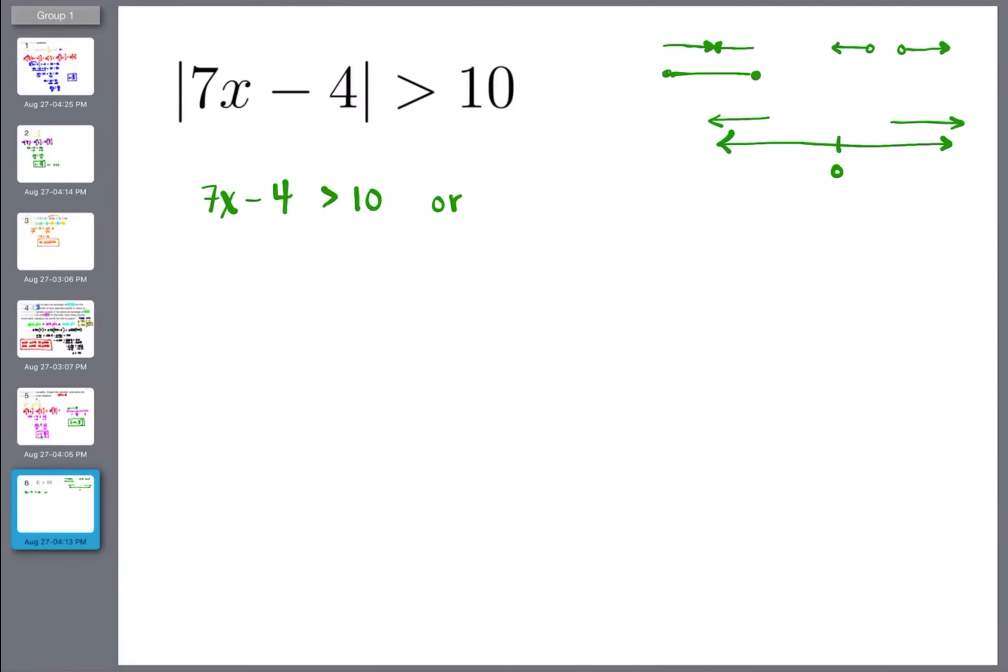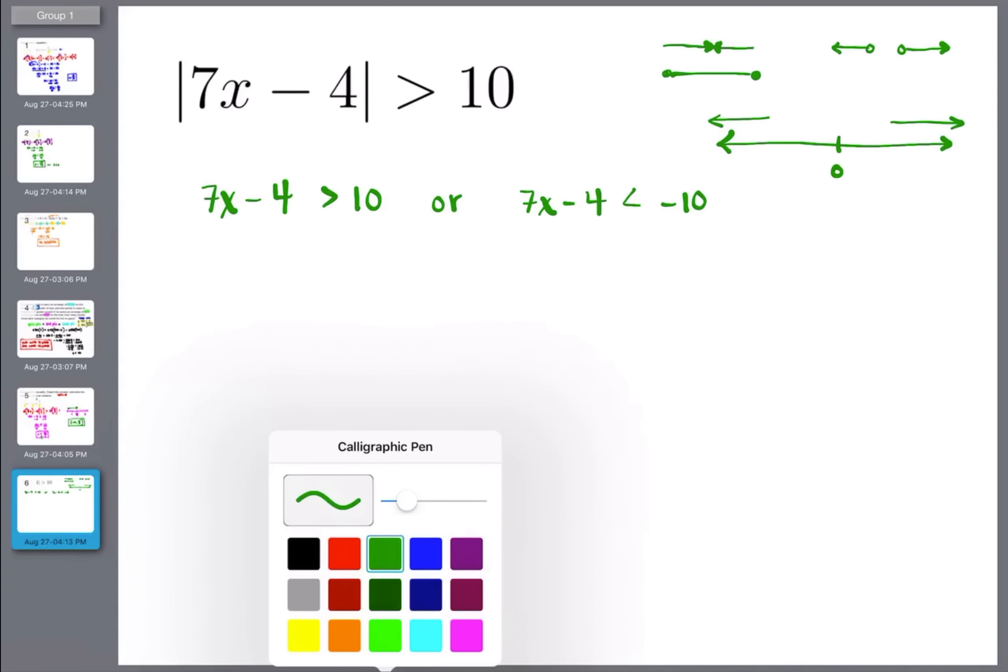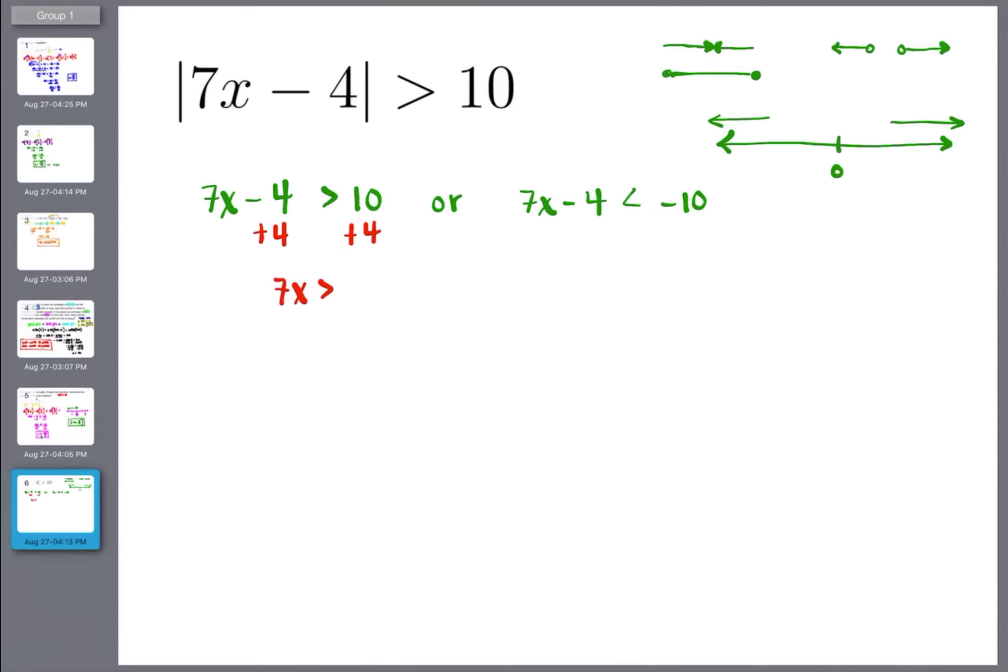Seven x minus 4 is greater than 10 or. And just like with the equations, you remember the first time you write it, all you do is drop the bars and we write the word or. And the second time I write it, I'm going to write 7x minus 4. But instead of 10, I have to negate, meaning multiply by a negative. And if I multiply by a negative, that symbol also flips. And now I can solve each of the inequalities that we've just drawn. So if we solve this one, 7x is greater than 14.